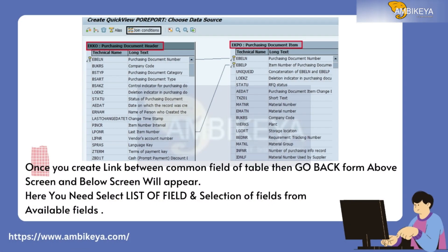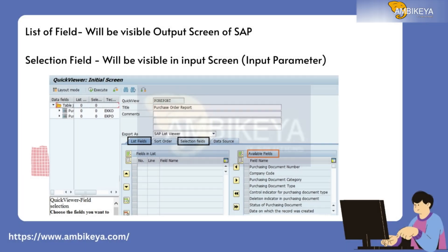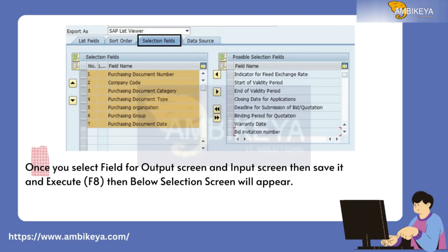Once you create the link between the common fields of the tables, go back from the above screen and the below screen will appear. Here you need to select the list of fields and selection fields from the available fields. The list of fields will be visible on the output screen of SAP, and the selection fields will be visible on the input screen as input parameters.